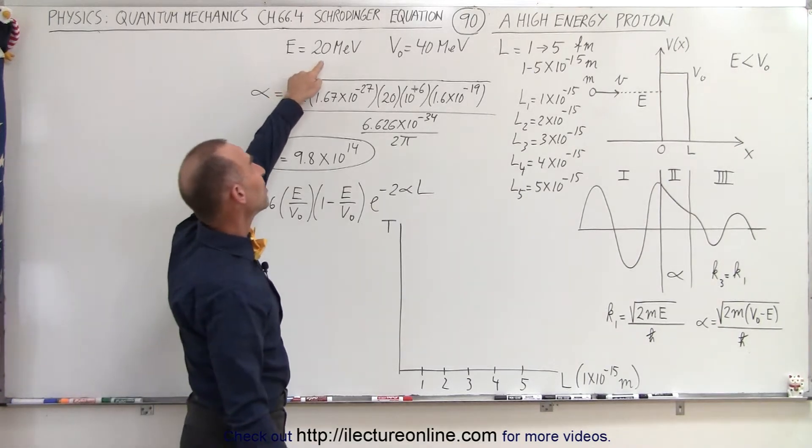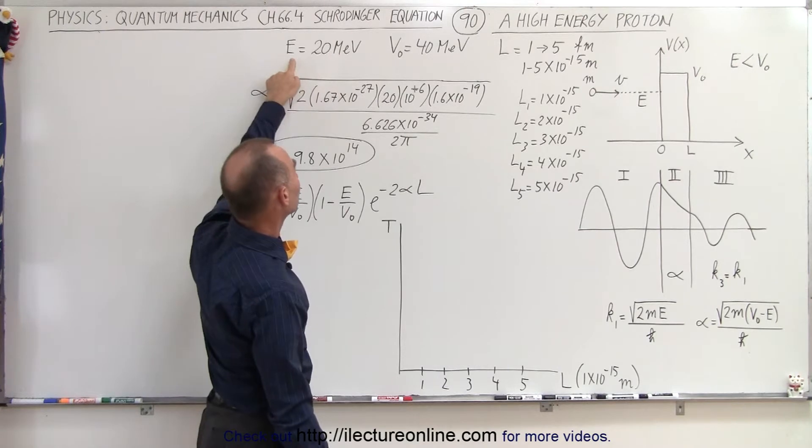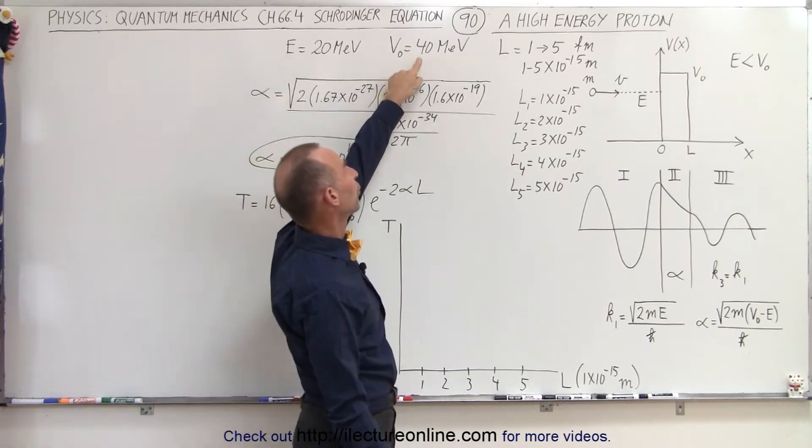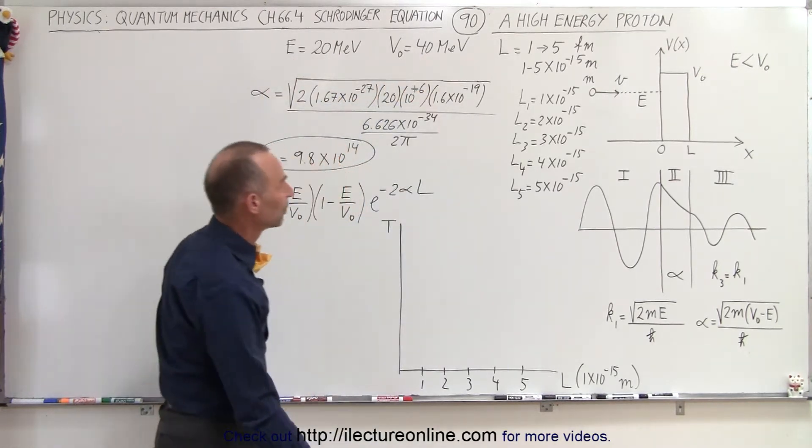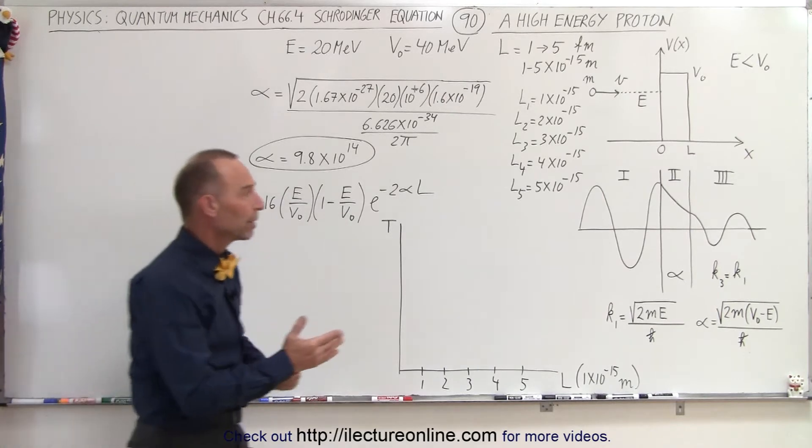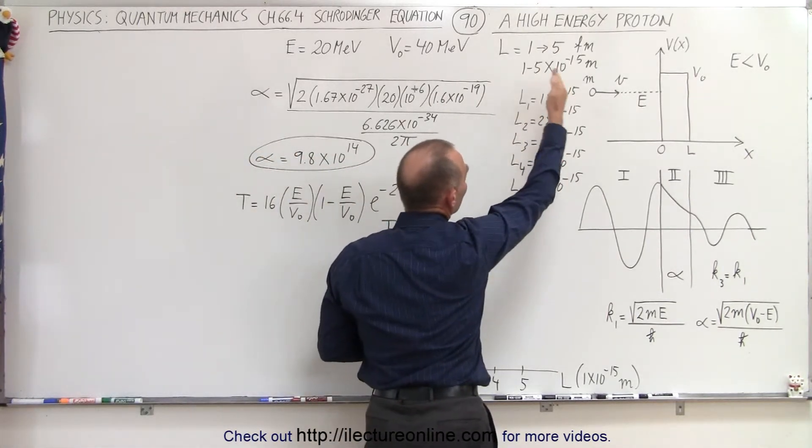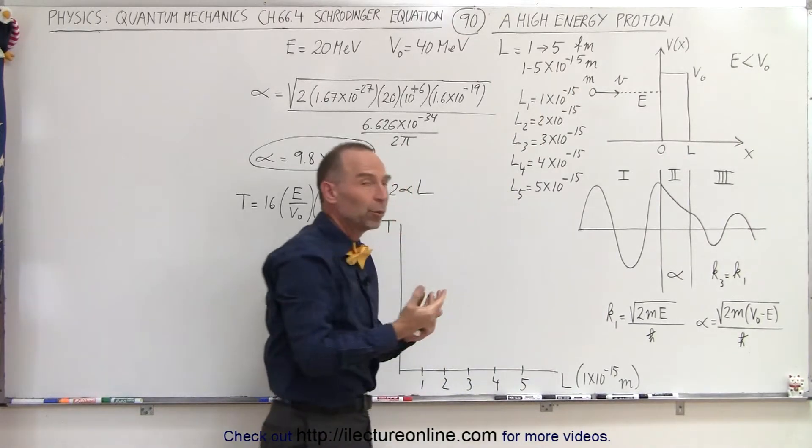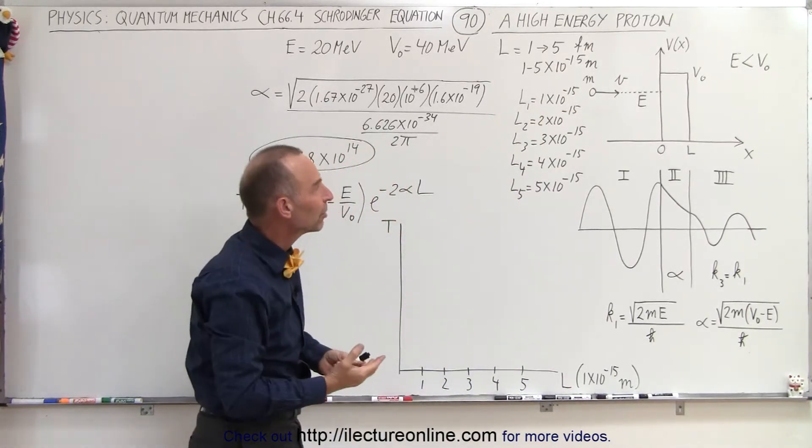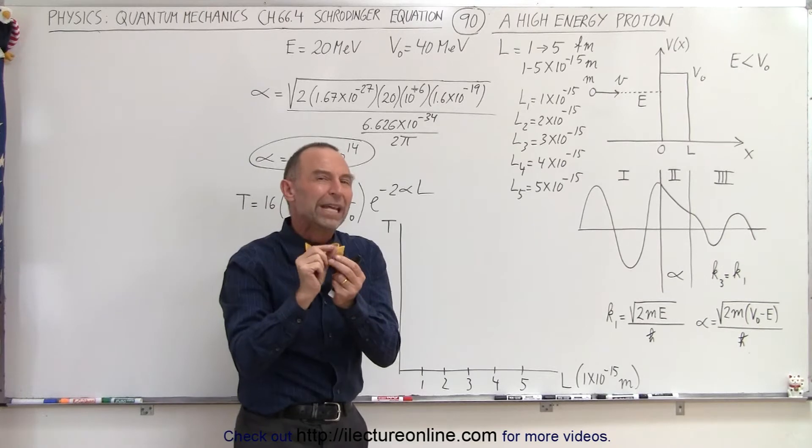So we have a 20 MeV million electron volt proton trying to make it through a barrier of 40 million electron volts. We're going to assume that the barrier is going to take on different widths, starting with one femtometer, making it all the way to five femtometers. A femtometer is 10 to the minus 15 meters, so that's in the order of the radius of a nucleus.